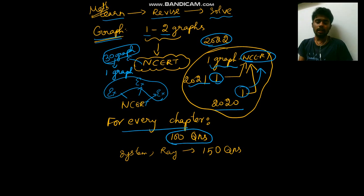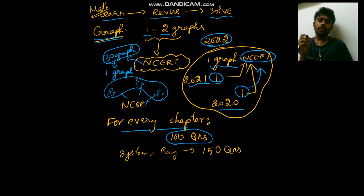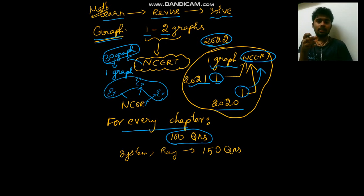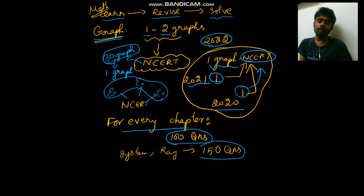In the current chapter, you have to attempt 100 questions. For example, mechanical properties of solids and units — in these small chapters like AC current, you have to attempt 100 questions. For bigger chapters such as system of particles, work, energy, power, and ray optics, you have to attempt 150 questions.